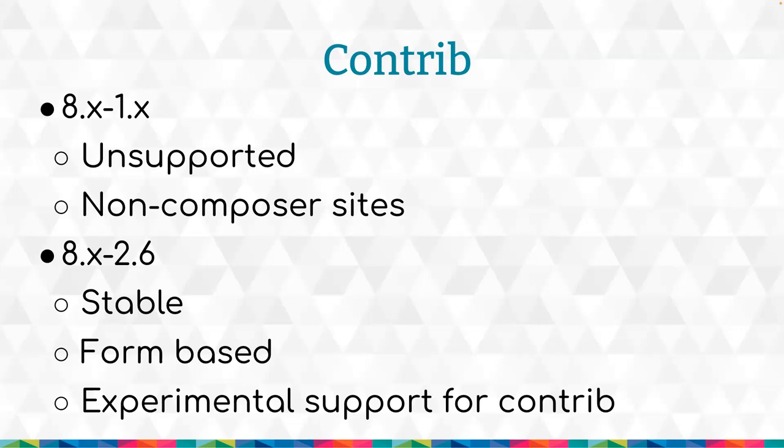Those update types — patch releases monthly, minor releases twice a year, and then major — are roughly in order of risk to your site. Monthly patch releases probably won't break your site. Minor releases require more testing. Major updates, like going from Drupal 7 to 8 or 8 to 9, have historically been a lot of work, though things are getting easier.